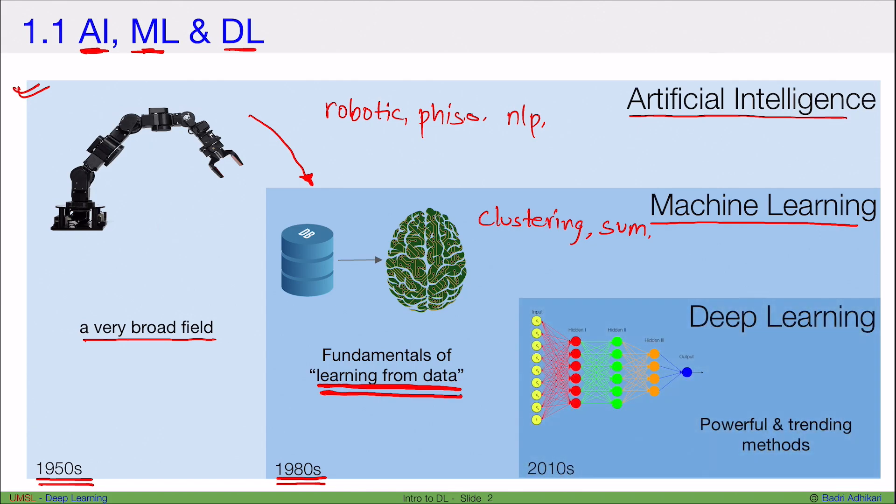Within machine learning we have this topic of deep learning. This term was coined in the 2010s, and within machine learning it's the more powerful and trending methods. Usually the number of layers must be at least more than two hidden layers, and then there are techniques—everything you hear about recurrent neural networks and convolutional neural networks, reinforcement learning, and all those newer topics particularly used in computer vision and natural language processing. The modern techniques all fall under this topic of deep learning.